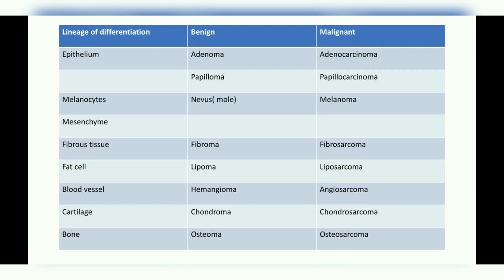The malignant tumor of mesenchymal tissue is called a sarcoma. In epithelial tissue, when it forms glands, a benign tumor is called an adenoma and a malignant tumor is called an adenocarcinoma. A benign tumor of epithelium forming finger-like projections called papillae is called a papilloma, and the malignant equivalent is a papillocarcinoma. In case of melanocytes, a benign tumor is called a nevus — commonly called a mole — and a malignant tumor of melanocytes is called melanoma.